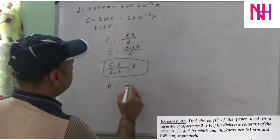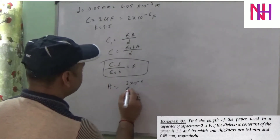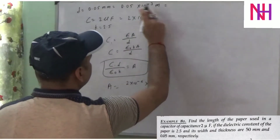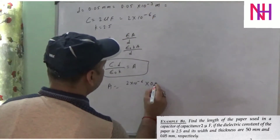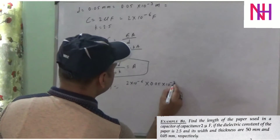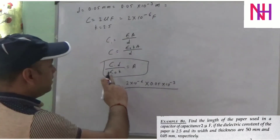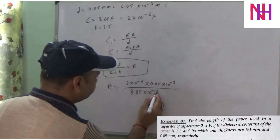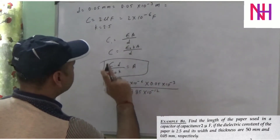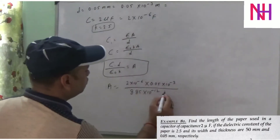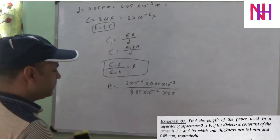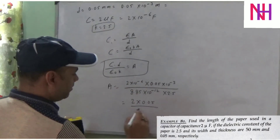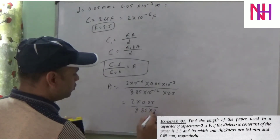Substituting values: A = (2 × 10⁻⁶ × 0.05 × 10⁻³) / (8.85 × 10⁻¹² × 2.5). Numerator: 2 × 0.05 = 0.1 × 10⁻⁹. Denominator: 8.85 × 2.5 = 22.125 × 10⁻¹².